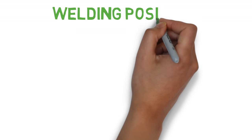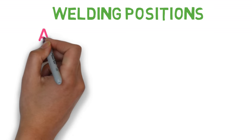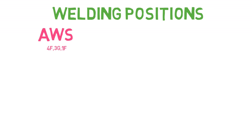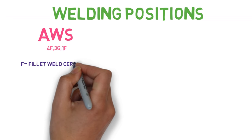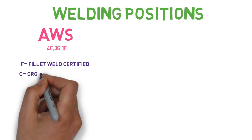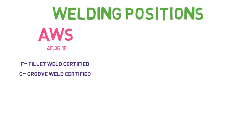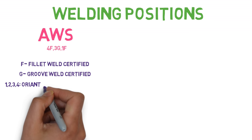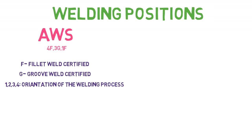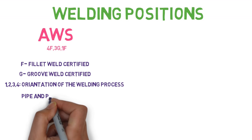Let's talk about welding positions. First, AWS. You have seen certifications like 4F, 3G, 1F. Here, capital F means fillet weld and capital G means groove weld. So there is a separate certification for fillet weld and groove weld. Also, numbers like 1, 2, 3, 4 represent the orientation of the welding process. One very impressive thing about AWS is that welding positions and certification of the welders are separated by pipe certification and plate certification, and they are separate with separate requirements.